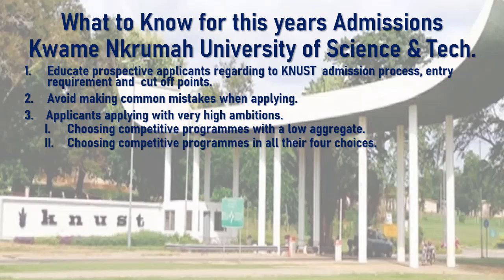For instance, if your final aggregate is, let's say, aggregate 15, and you apply for a competitive program like Bachelor of Law — where the cut-off point for last academic year was aggregate 6 — what this means is that you don't stand a chance of gaining admission to read law.